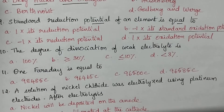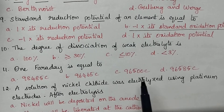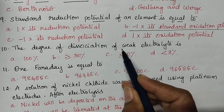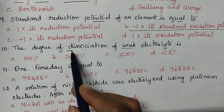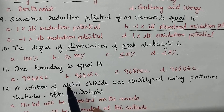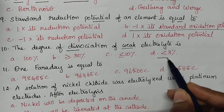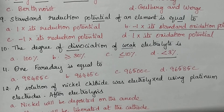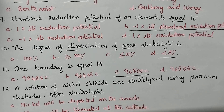The degree of dissociation of a weak electrolyte — weak electrolytes dissociate to a lesser extent. The degree of dissociation of a weak electrolyte is very small, less than 3%. One Faraday is equal to 96,500 coulombs.